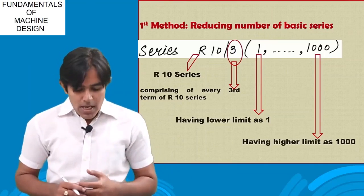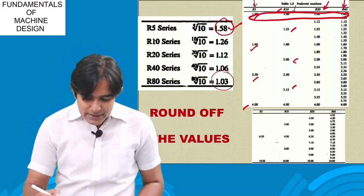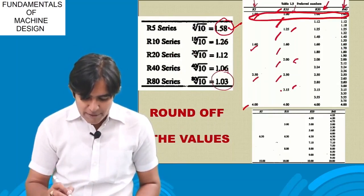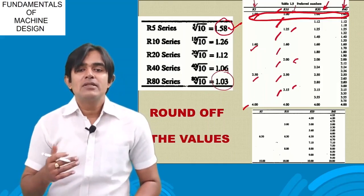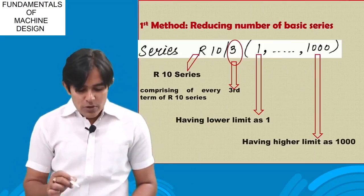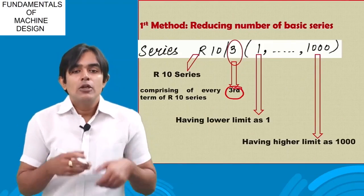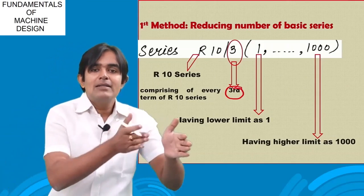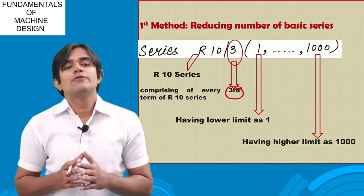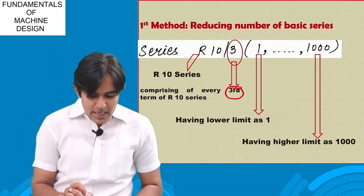The first method is reducing the numbers of the basic series. In the R10 series, the numbers are 1, 1.25, 1.60, 2, 2.5, 3.5, and so on. If I reduce certain numbers from this, I get a derived series. For example, if I do R10/3, I am taking every third number into consideration — not the full R10 series, just every third number. This reduces the number of terms in the series and that is why it is called a derived series.